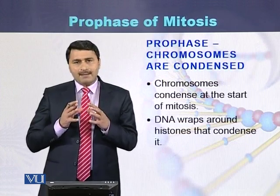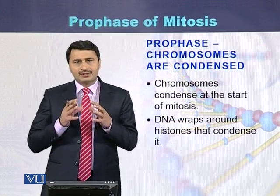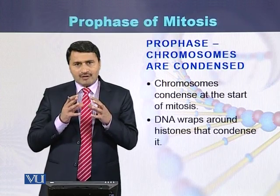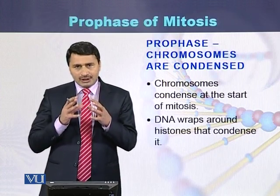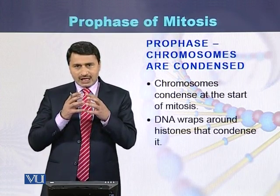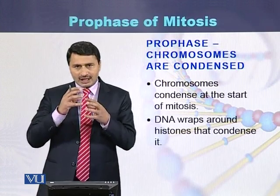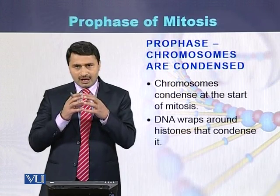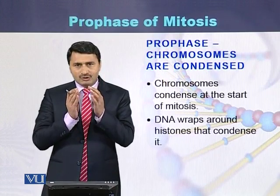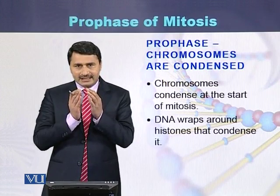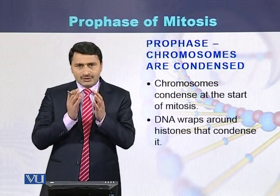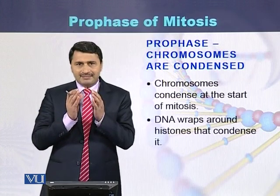During prophase, chromosomes are condensed. The condensation of chromosomes is due to folding and supercoiling with the help of nucleosomes, which wrap DNA around histone molecules. After wrapping, nucleosomes are formed and placed side by side, and through folding and super-folding, chromosomes become small and thick.